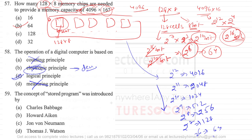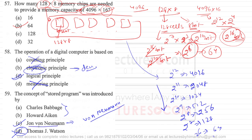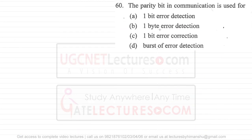Question number 59: the concept of stored program was introduced by Von Neumann, which is why it is called Von Neumann architecture — you store the program and then run the stored program. It is not Charles Babbage, not Howard Aiken, not Thomas J. Watson. Von Neumann introduced the concept of stored program architecture.